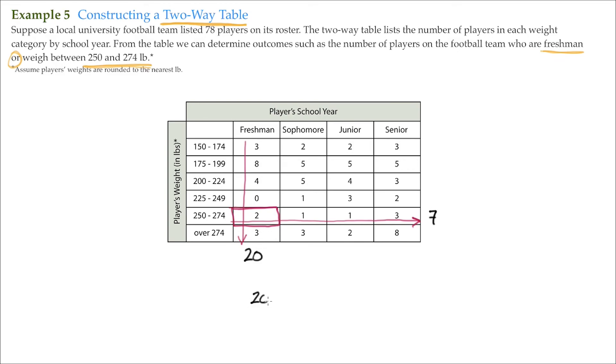So we would go ahead and add the 20 freshmen plus the 250 to 274 pound players, but subtract out those that we would wind up counting twice. So that winds up being 25 players. What number of players on the football team are freshmen or weigh between 250 and 274 pounds? 25 players.